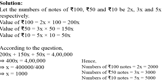100 रुपए वाले notes की जो value है वो हो जाएगी 2x multiply by 100, it means 200x. Similarly, 50 रुपए वाले notes की value हो जाएगी 3x multiply by 50 = 150x. And value of 10 rupees notes is equal to 5x multiply by 10 = 50x. और question के according हमें दिया हुआ है कि इन सारे notes का sum 4 lakh है।